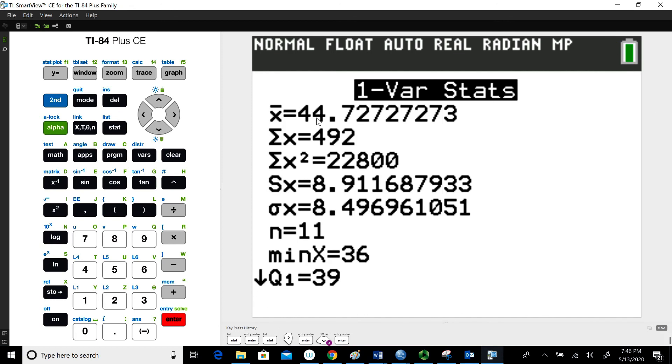So the very first thing it gives us is our sample mean. I'm going to ignore the next two, but those are useful. The S with the subscript of X is the sample standard deviation right there, 8.911687933. That's the sample standard deviation. And then the sigma with the X is the population standard deviation.